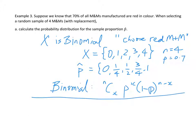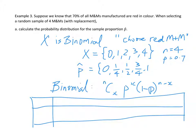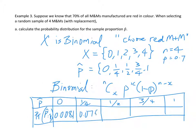And so I can set up one of these little tables here. And up here I'll have p hat, so I've got 0, 1 quarter, 1 half, 3 quarters, and 1. And your probabilities are capital P of p hat equals little p hat. And you have 0.0081, 0.0756, 0.2646, 0.4116, and 0.2401.